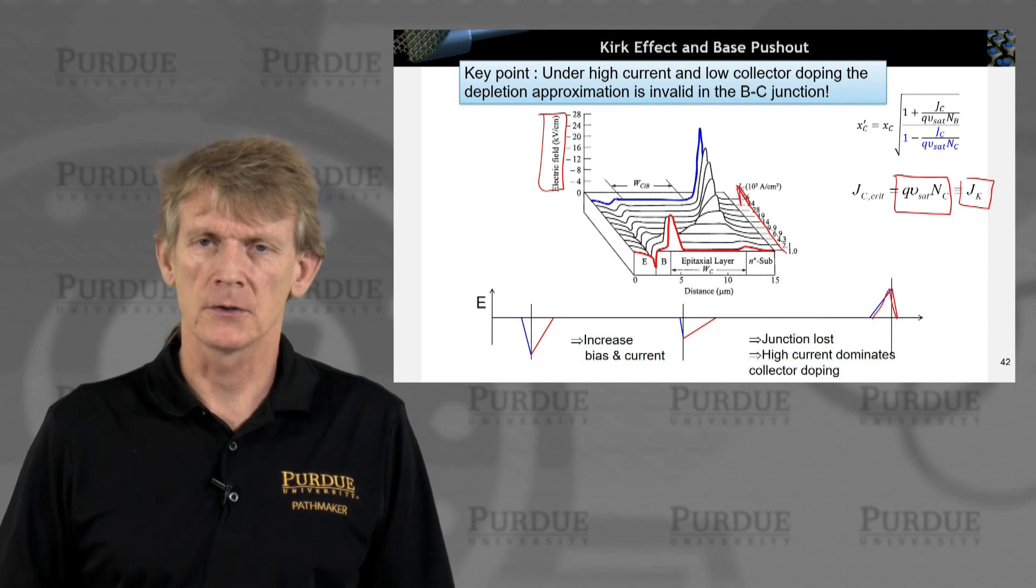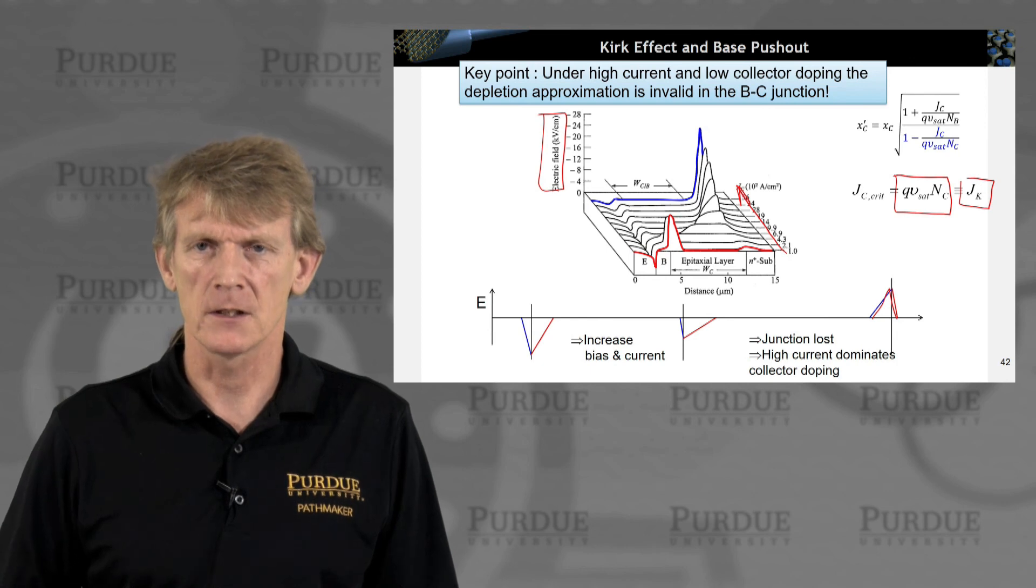And the critical voltage at which this can happen is associated with a saturation velocity in the system that is now dependent on, say, material quality, silicon, etc. Maybe other materials have slightly different saturation velocities.